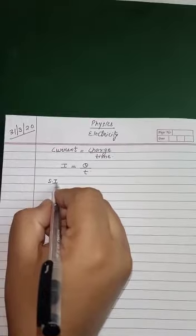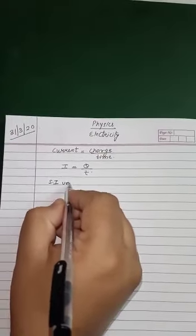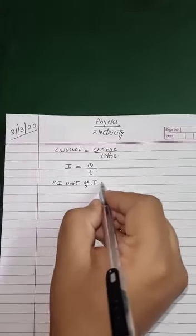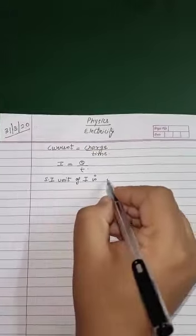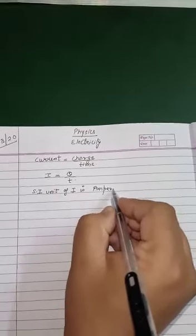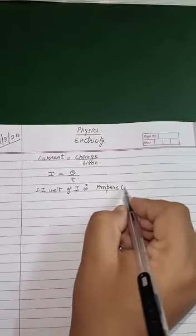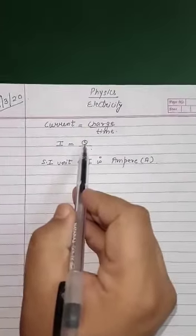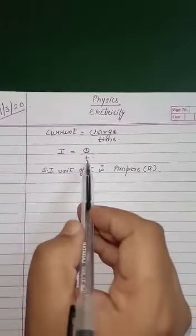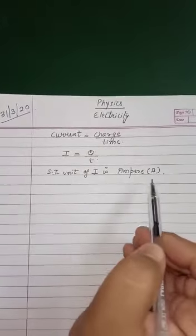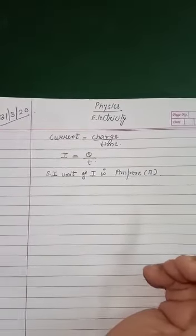The SI unit of current is ampere, represented by the letter A. The unit of charge is coulomb, and the unit of time is second, so the unit of current is ampere.